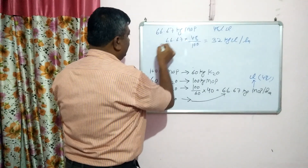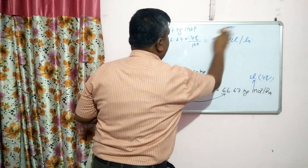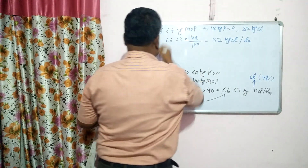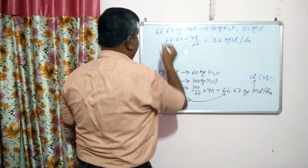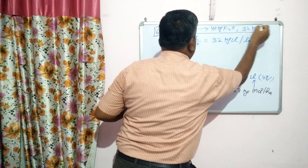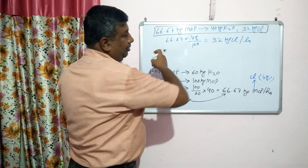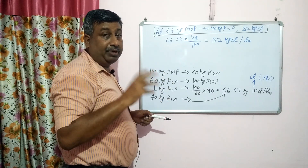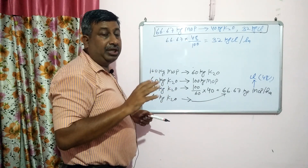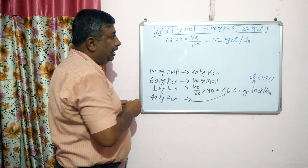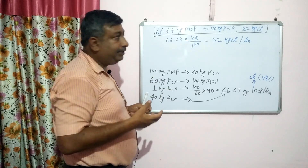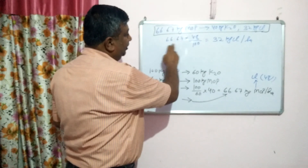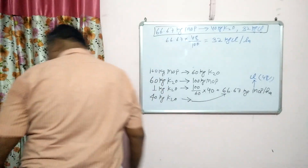So to supply 40 kg potassium oxide, we require 66.67 kg MOP, and the chloride content at 48% provides approximately 32 kg chloride per hectare. We generally forget about the chloride content, but this is a large quantity since chloride is a micronutrient required in low amounts. This chloride interferes with starch content, sugar content, and the burning quality of tobacco — that is why MOP is not recommended for those crops. So first calculate MOP according to potassium oxide, then calculate the chloride content as 48% of that MOP amount.